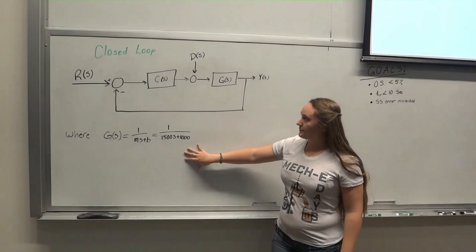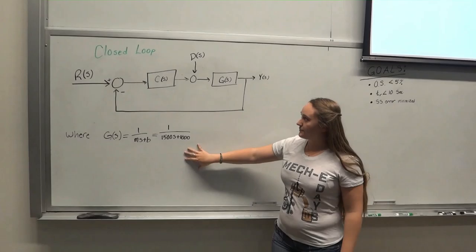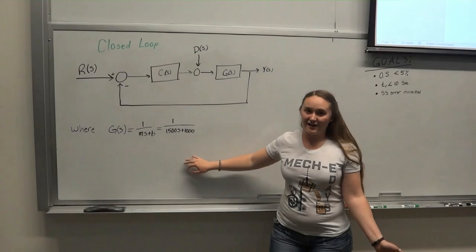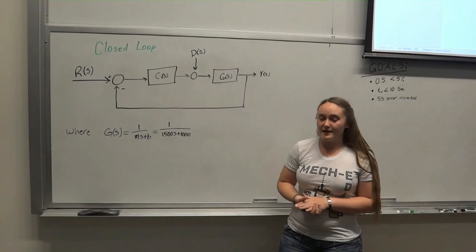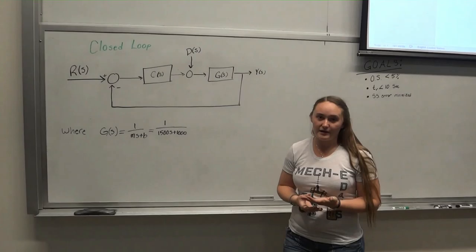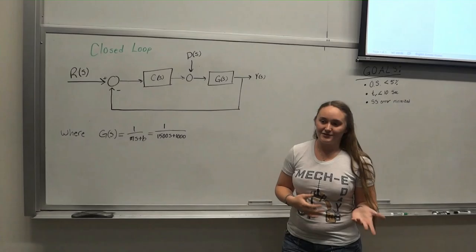So we found g of s to be 1 over ms plus b in our initial preliminary calculations of that transfer function, and here we approximated m to be roughly 1,500 and b to be 1,000. The mass was calibrated by doing some research, finding the average mass of a car that would be considered a driverless vehicle, not a truck, just a car, and then b was also an average calculation.